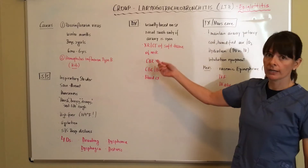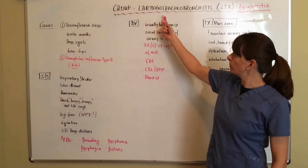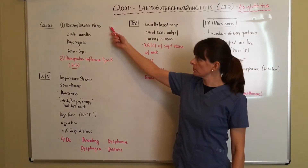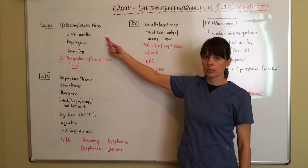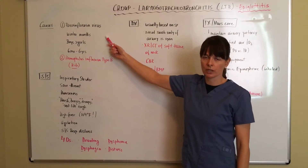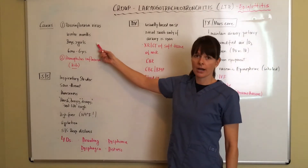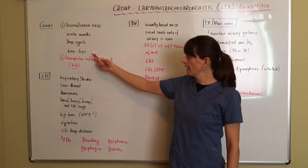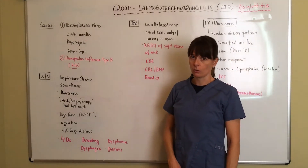Let's go over the causes. Croup or laryngotracheal bronchitis is typically caused by the parainfluenza virus. It typically occurs in winter months, like most pediatric respiratory disorders. Boys have a higher prevalence than girls, and the age range is usually six months to six years old.